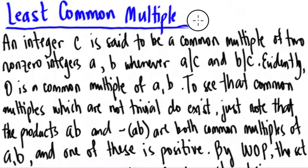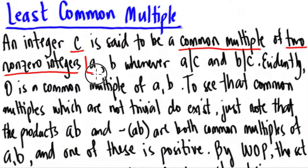Now, an integer c is said to be a common multiple of two non-zero integers a and b whenever a divides c and b divides c. Meaning a is a factor of c and b is also a factor of c. So evidently, zero is a common multiple of any a and b.